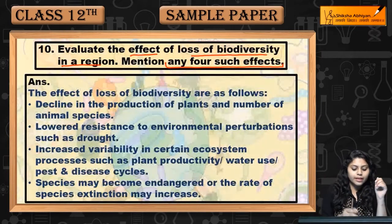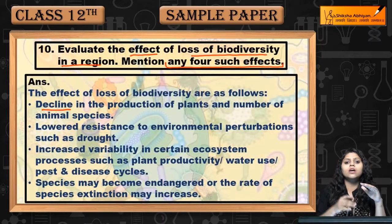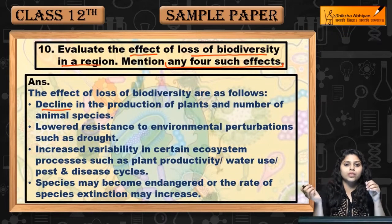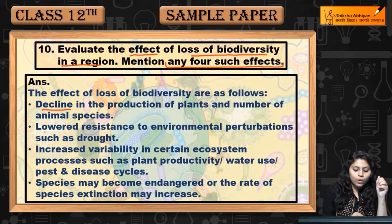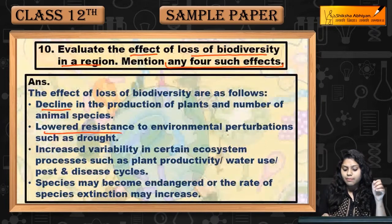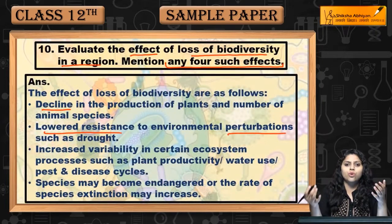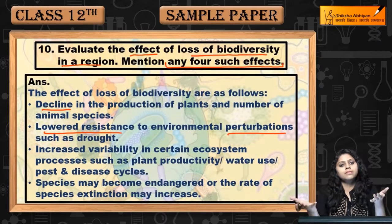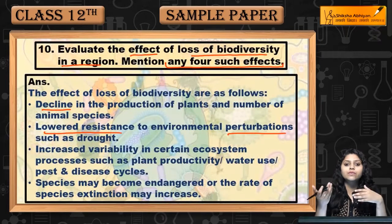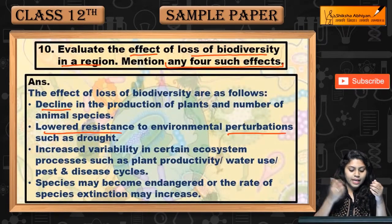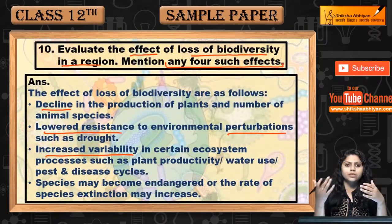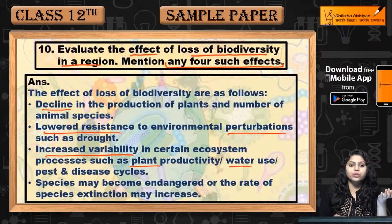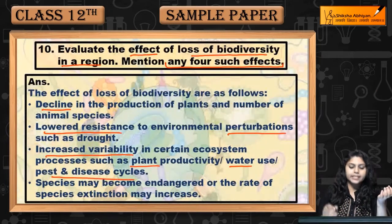What can happen: production will decline — plants will be reduced, animals will be reduced. There will be reduced resistance to environmental perturbations such as drought. There will also be increased variability in certain ecosystem processes such as plant productivity, water use, and pest and disease cycles.